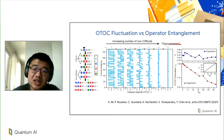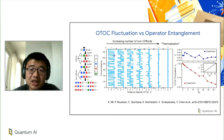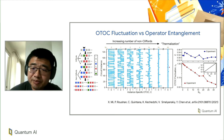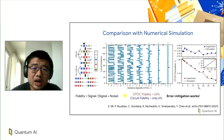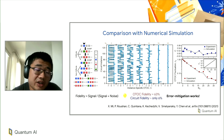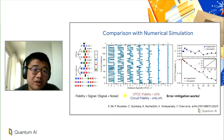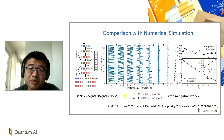This is essentially a digital thermalization process. It also turns out that OTOC fluctuation doesn't have the classical description that operator spreading does, which naturally leads us to ask: can we simulate this on a classical computer?